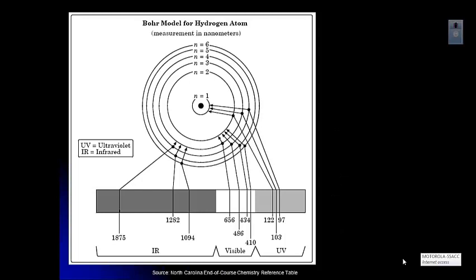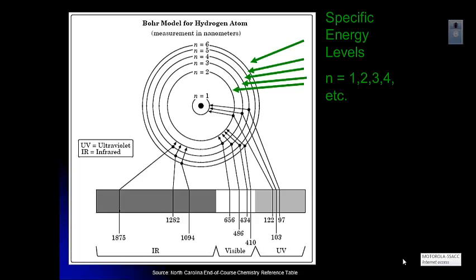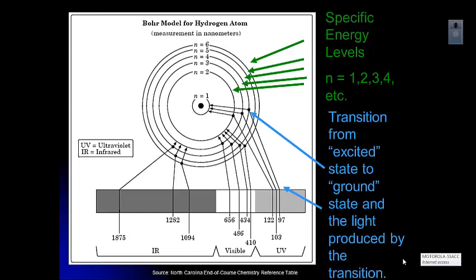So if you look in your reference table, you can see that you have this Bohr model for the hydrogen atom. And so it looks kind of funky, but let's look at what all the parts are. You've got these specific energy levels. Remember those energy levels correspond to the periods. And you can see that the one for the hydrogen atom has six showing on the page.